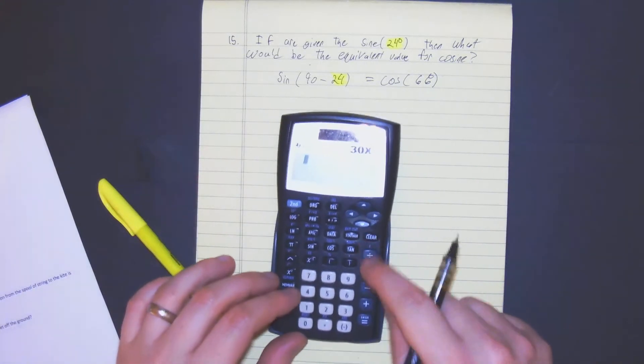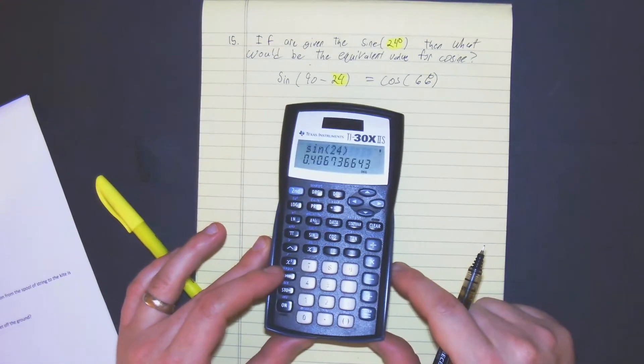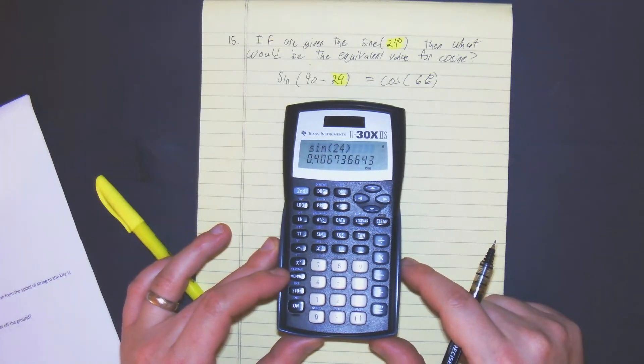Well, let's take a look real quick. So you can do sine 24, and you can just take a glance. This is 0.4067.